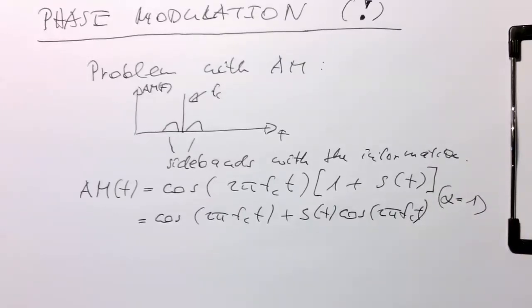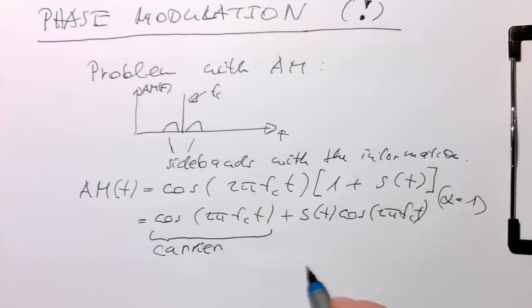And so we see already, if we split this up, how we can make this transmission more efficient. And because this is here our carrier and these are here essentially our sidebands.